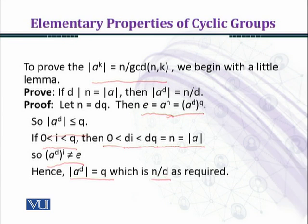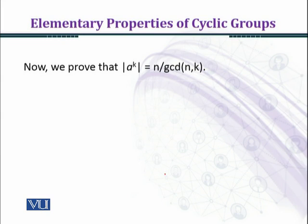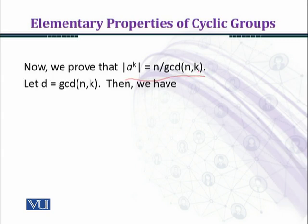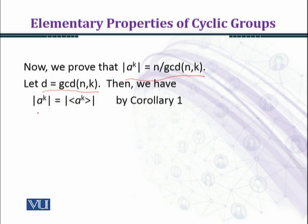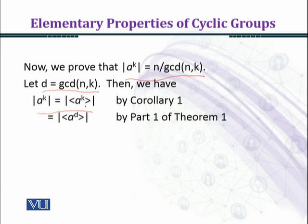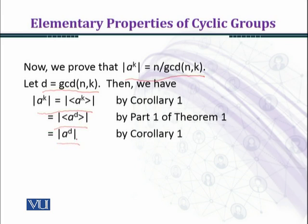Now we prove that the order of a^k is equal to n over GCD(n, k). Let d be the GCD of n and k. Then we have: order of a^k equals the order of the cyclic group generated by a^d — this is by part one of the theorem stated in the previous slide — which equals the order of the element a^d again by Corollary 1, which equals n over d by the lemma established above. This concludes the proof.